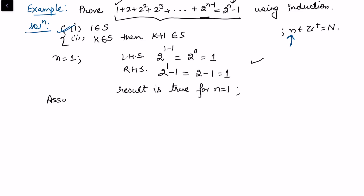By the induction step, we assume the result is true for n equals k. So we assume that 1 plus 2 plus up to 2 to the power k minus one equals 2 to the power k minus 1. This is the assumption step.